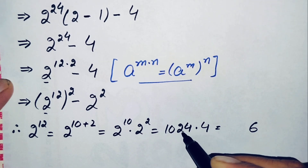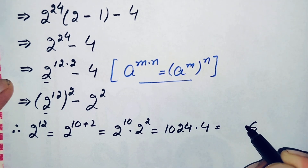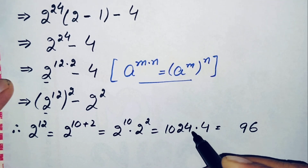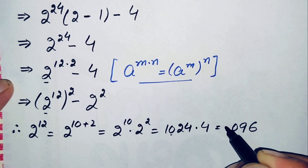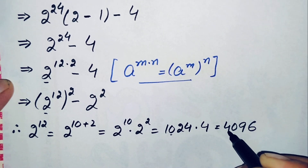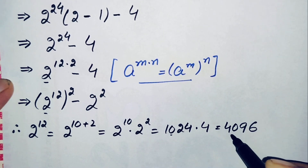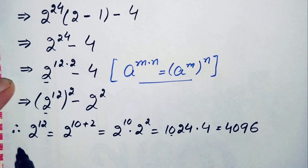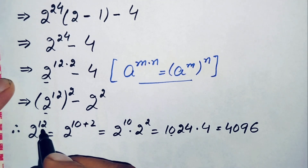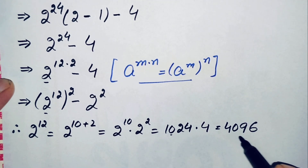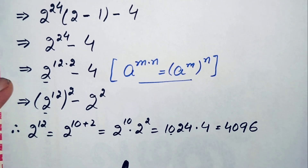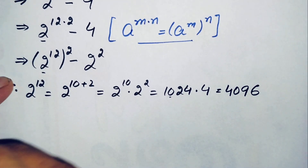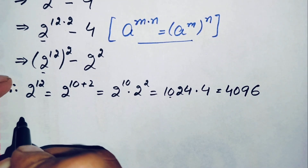So we have 1024 times 2 squared, which is 4. Multiplying: 4 times 4 is 16, carry 1; 4 times 2 is 8, plus 1 is 9; 4 times 0 is 0; 4 times 1 is 4. The product of these two numbers gives 4096. So the value of 2 raised to power 12 is 4096.